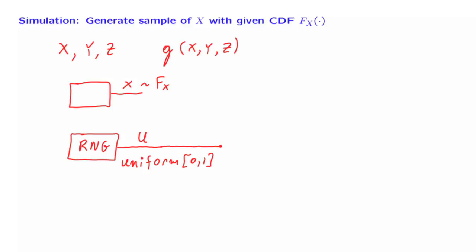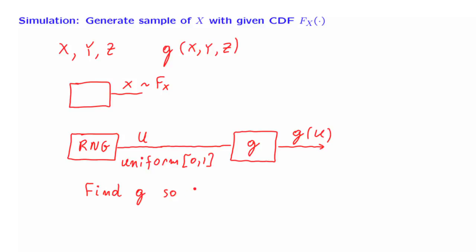How are we going to do it? What we want to do is to create some kind of box or function that takes this uniform random variable and generates g of u. We want to find the right function to use — find a g — so that the random variable g of u is distributed according to the distribution that we want. That is, we want the CDF of g of u to be the CDF that's given to us. So let us see how we can do this.